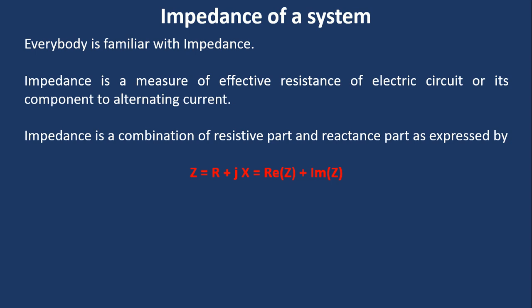Or you can say real part of impedance plus imaginary part of impedance. Here Z represents impedance, R means real part or resistive part, and X means the imaginary part or reactance part.